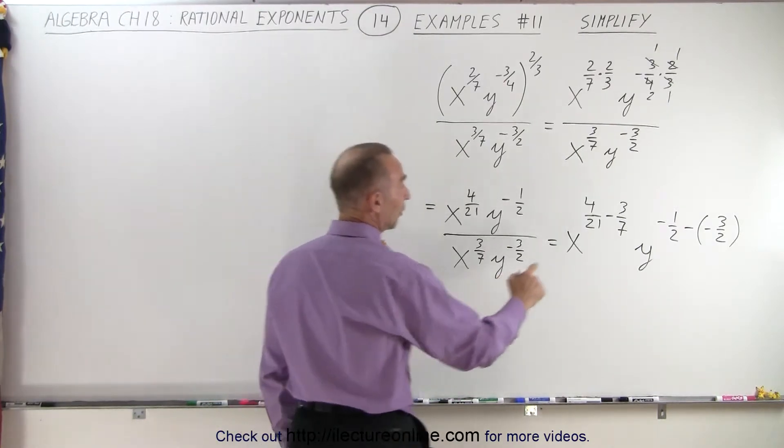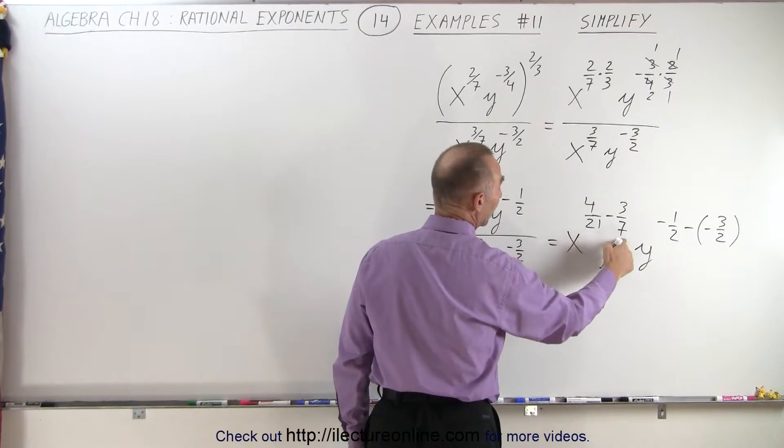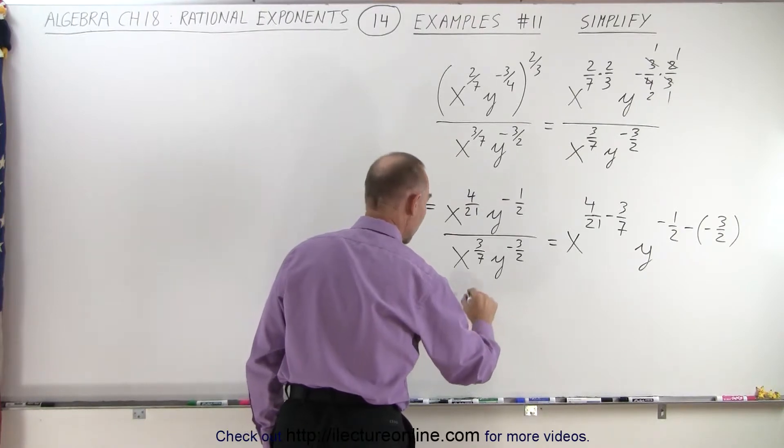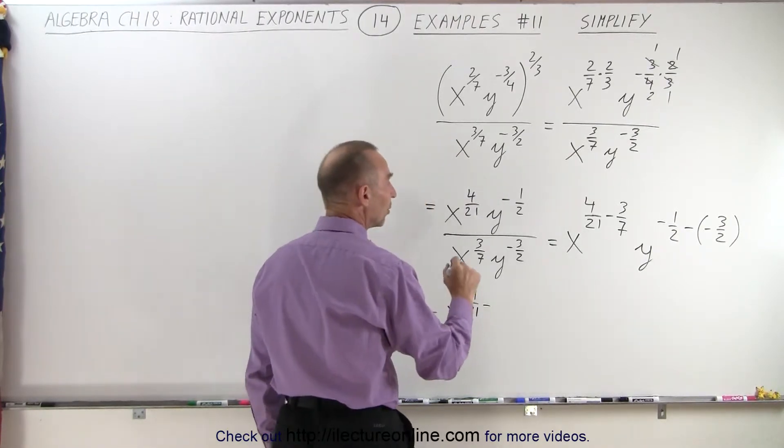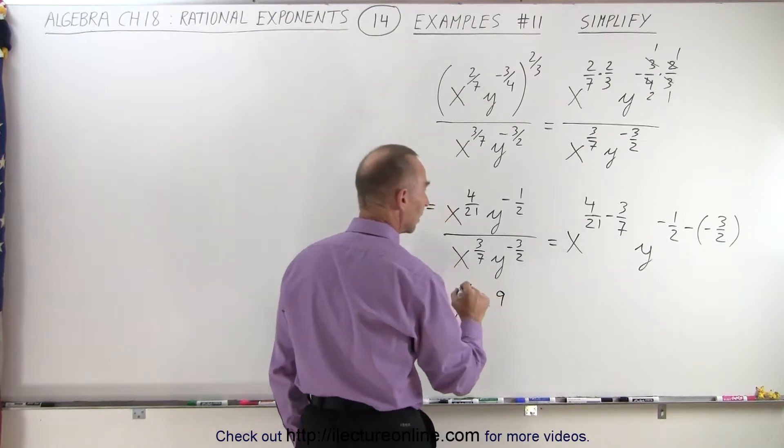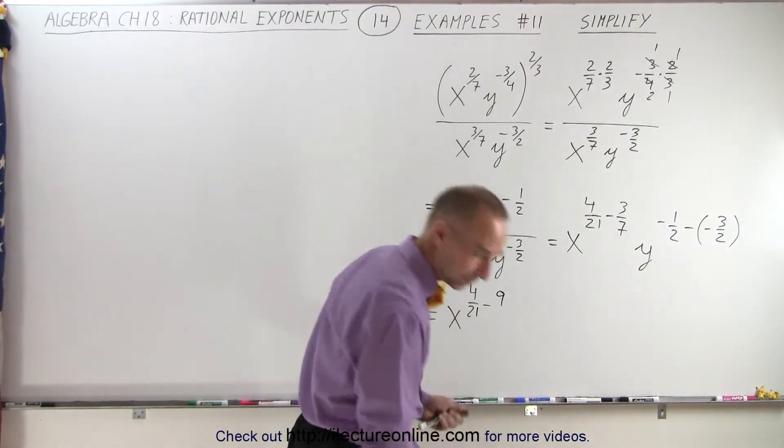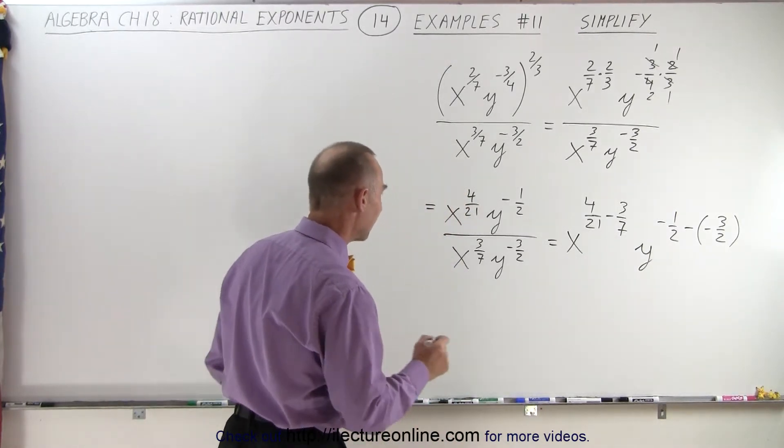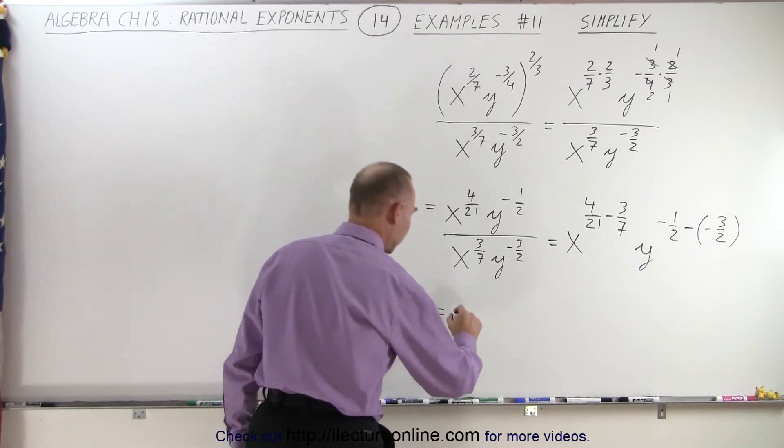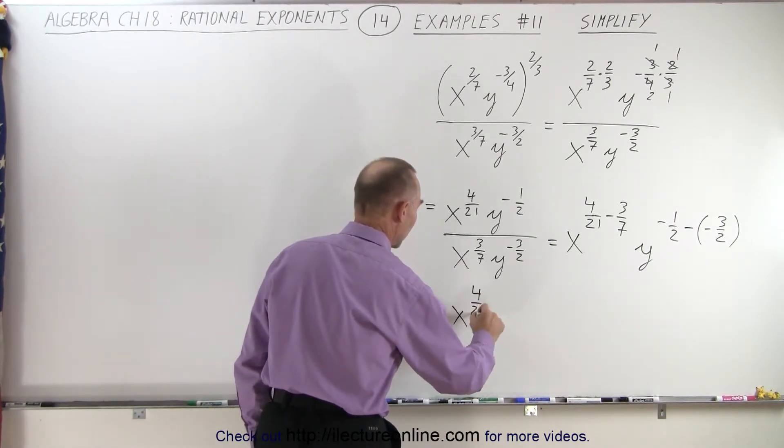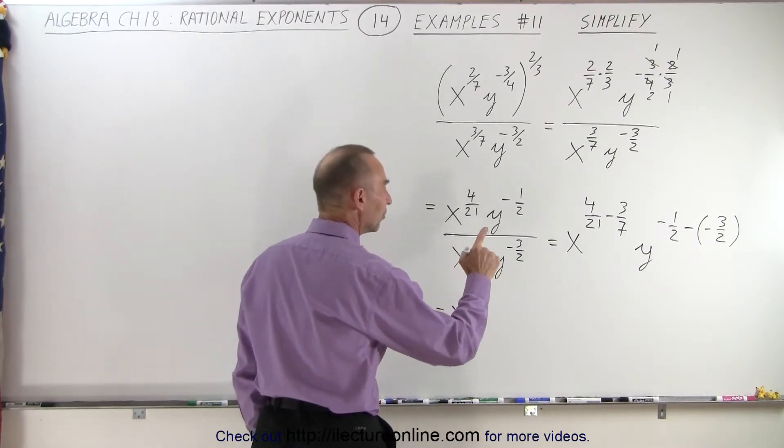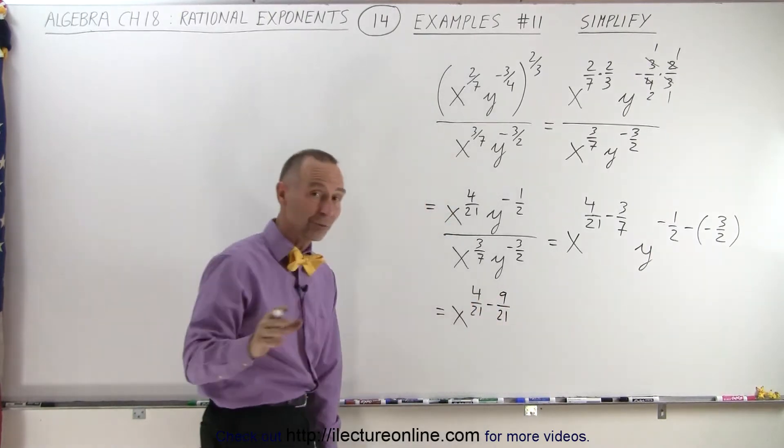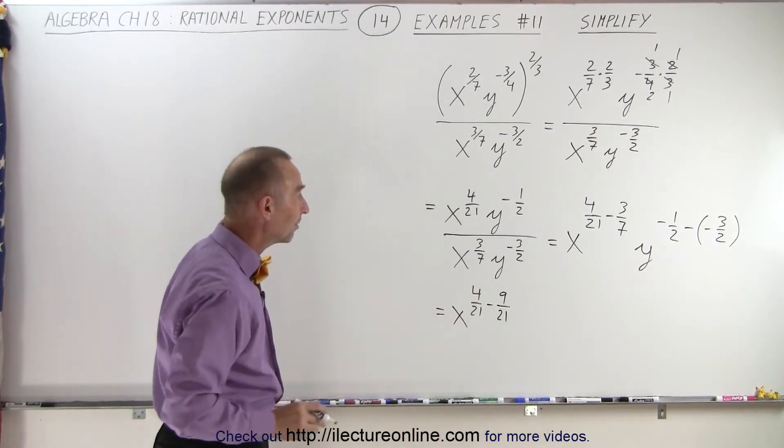So we have, well, first of all, we can't subtract until we have the same denominator. We need a common denominator of 21. So we multiply the top and the bottom by 3. So this becomes x to the 4 over 21 minus 3 times 3 is 9. So this becomes equal to x to the 4 over 21, and then minus 3 times 3, which gives us 9, and 3 times 7 gives us 21. So now we can go ahead and subtract the exponents because we have the same denominator.